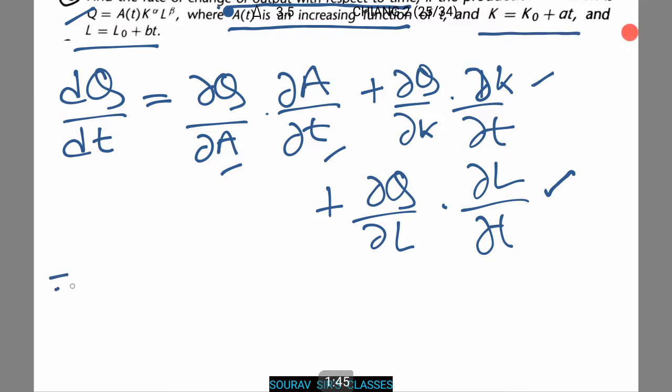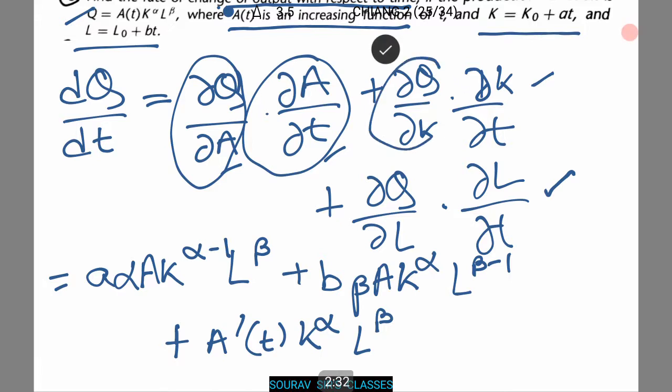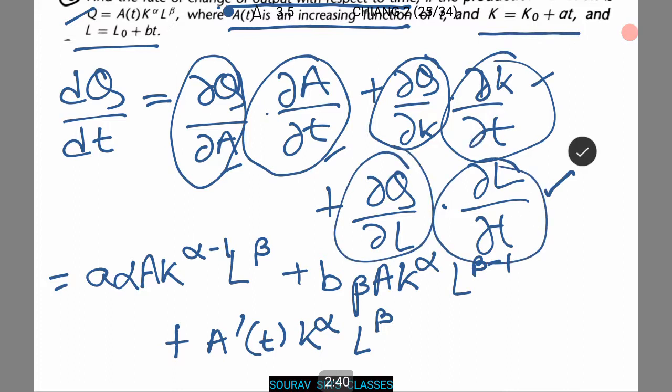Let's see what the value comes. This is equal to alpha A K to power alpha minus 1 L to power beta plus b beta A K to power alpha L to power beta minus 1 plus A dash t K to power alpha L to power beta. I have done it in one simple step. If you want you can do it in several steps.